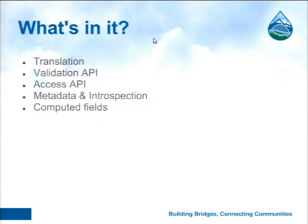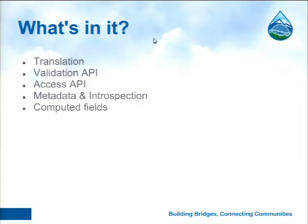The basic features of the new API are: translation — every field is translatable and there are ways to access translations, add translations, and see in which language an entity is translated. There is a validation API, an access API which allows you to check in a generic way for every entity on the system whether you can view, edit, or delete it. And importantly, there is metadata and introspection — you can find out if an entity has certain fields and what kind of settings they have. There are also so-called computed fields.